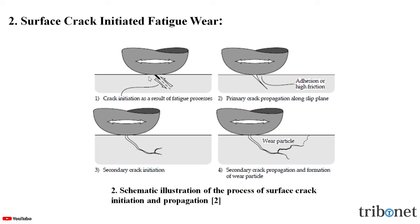We can see that a primary crack originates at the surface at some weak point and propagates downward along weak planes such as slip planes or dislocation cell boundaries. A secondary crack can then develop from the primary crack, or alternatively the primary crack can connect with an existing subsurface crack. When the developing crack reaches the surface again, a wear particle is released. This is how crack formation causes the worn-out particle in fatigue wear.